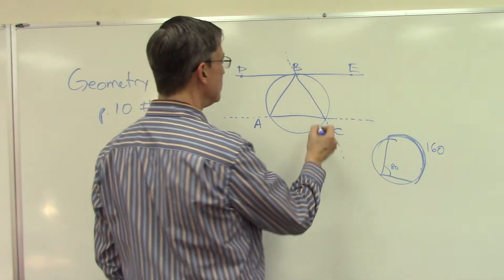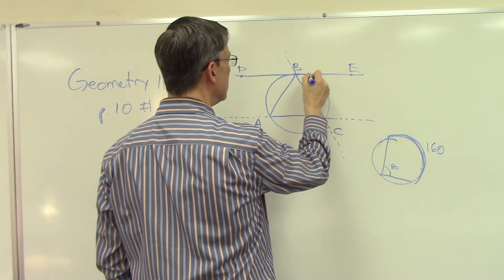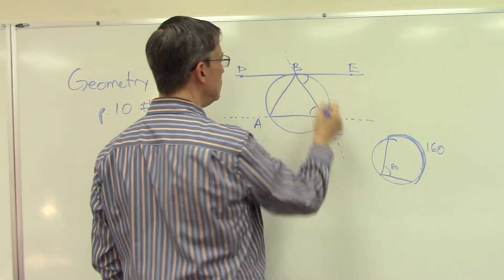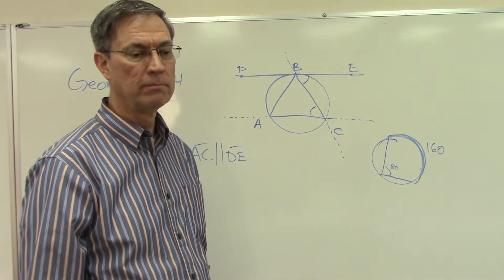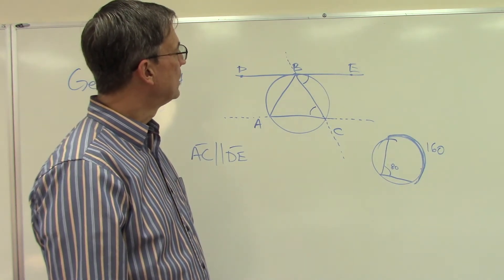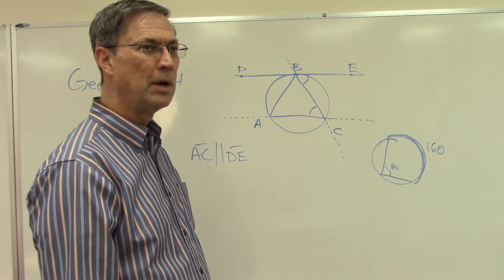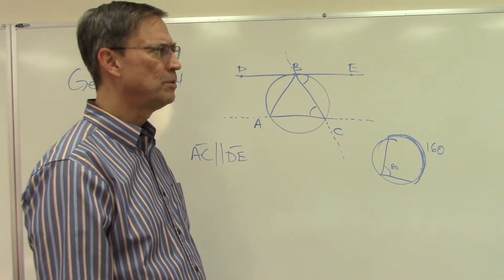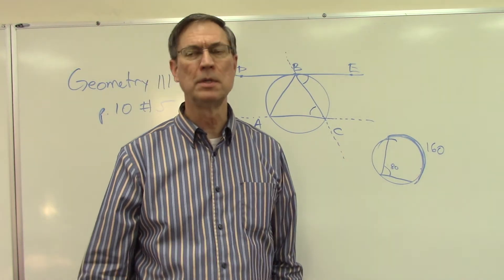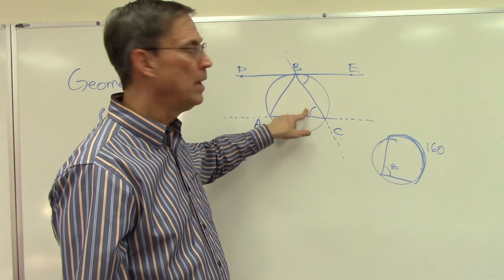So first of all, let's label, we have this angle here, and that is going to have to be congruent to that angle out there. All right? So that is one point that you can make. And I think, is there a theorem about if a transversal intercepts two parallel lines, the alternate interior angles are congruent? All right?